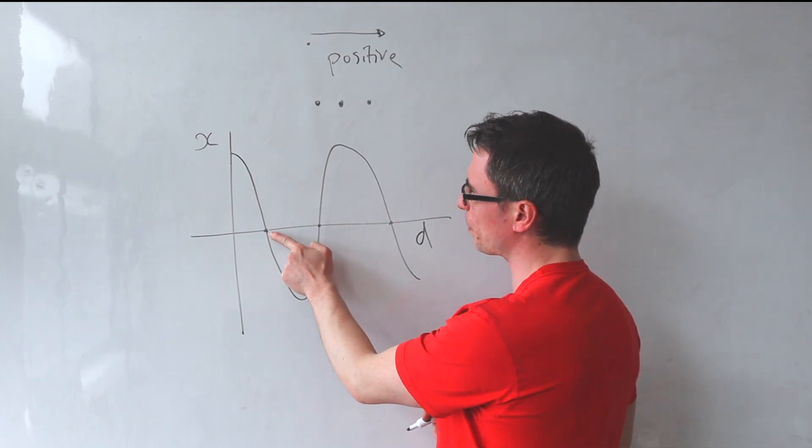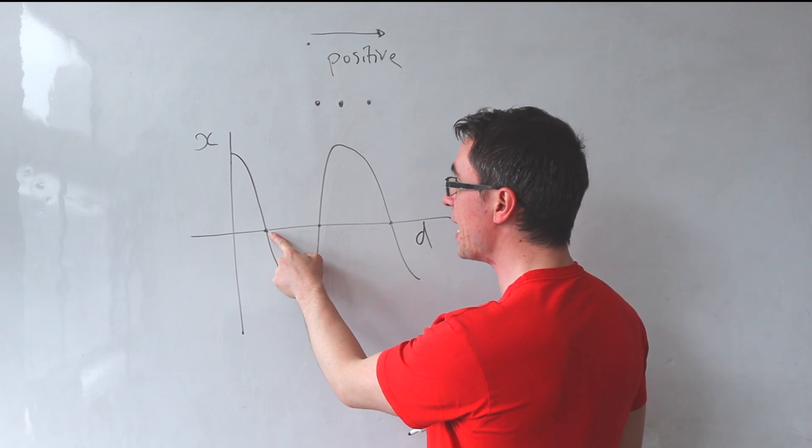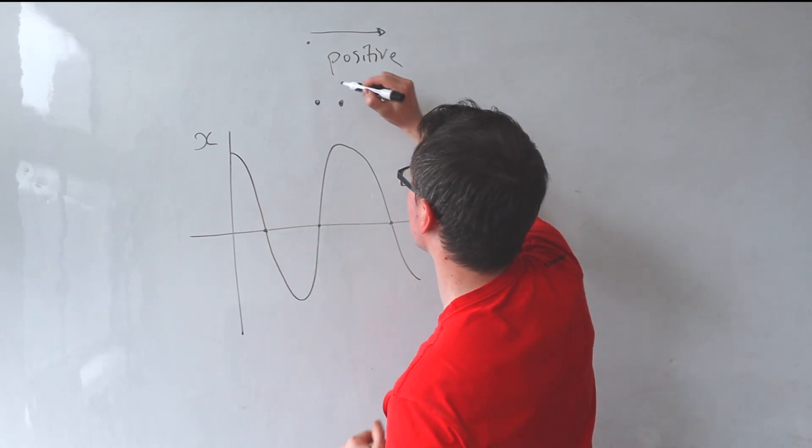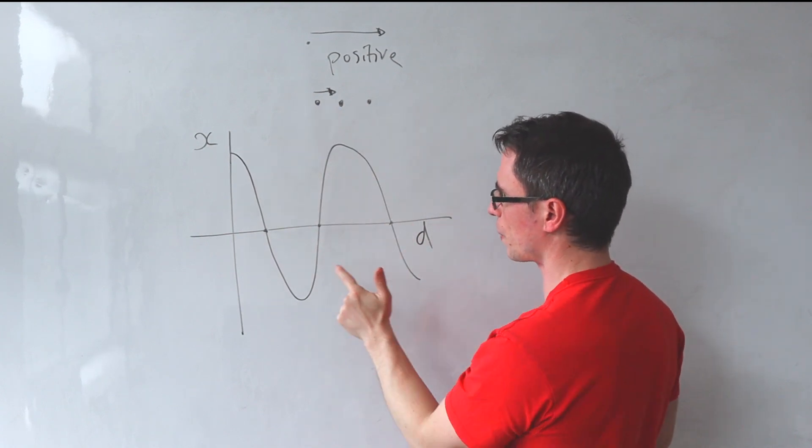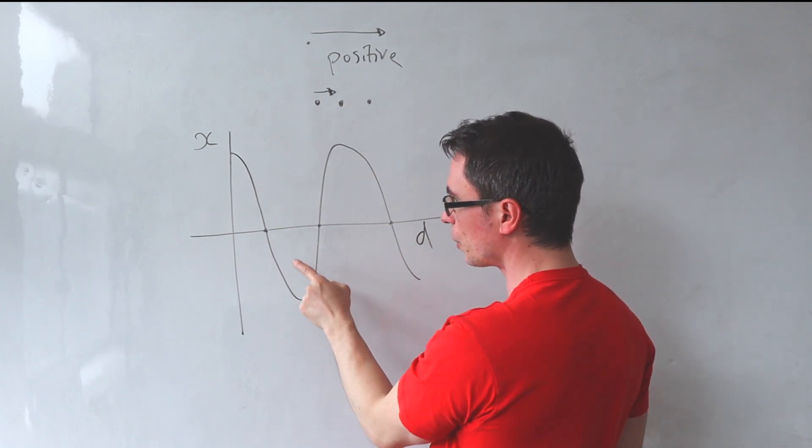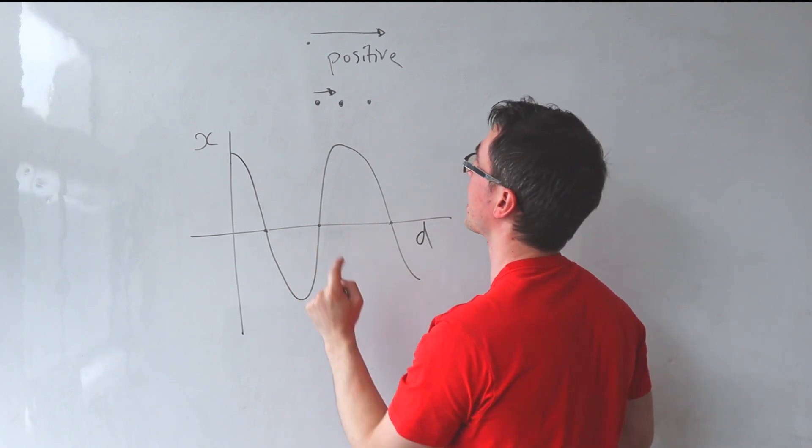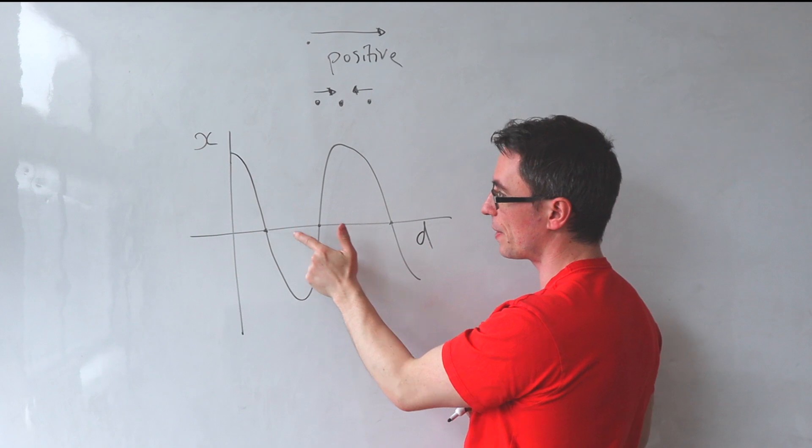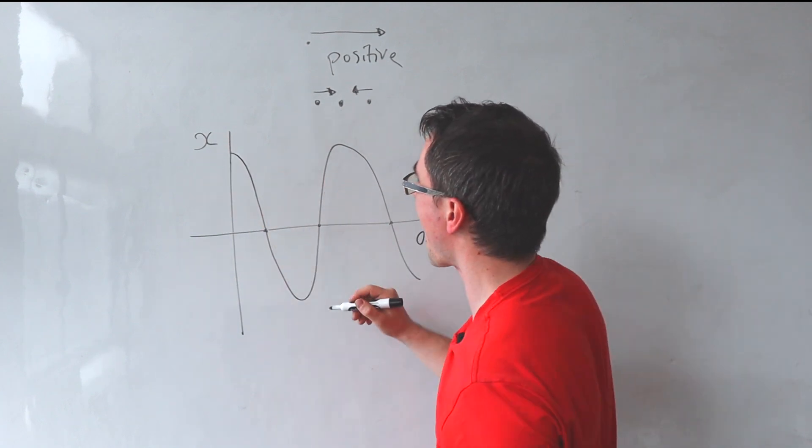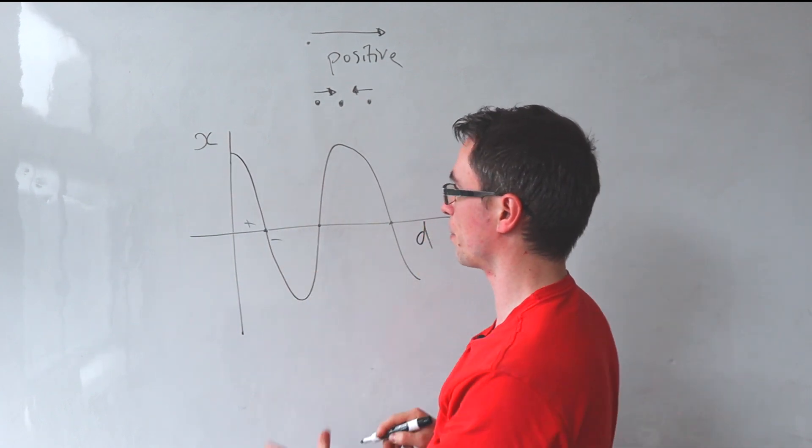Well, let's consider this point here. Its neighbor to the left has a positive direction of its displacement. In other words, this is to the right. Its neighbor to the right has a negative displacement. Therefore, this thing has to be a compression.